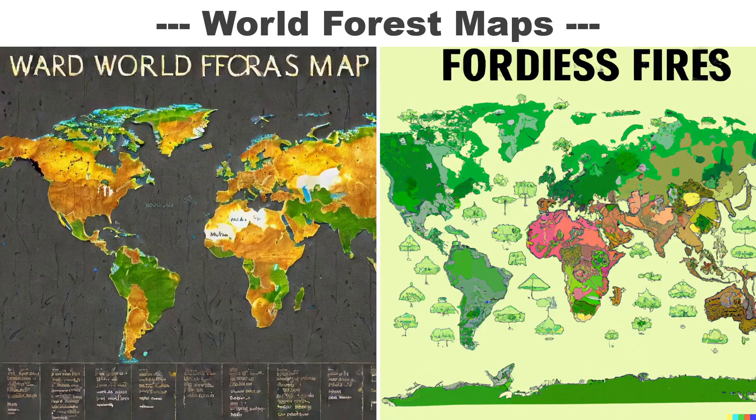AI image generators make weird and interesting maps. These two are meant to show world forest cover, and both have wonderful titles. I love the colors and textural patterns on the left one, and the one on the right has these terrific tree sketches over ocean areas. At first I thought green would represent forest, but some major forest areas are missed and there's a lot of green at very high latitudes, so I'm not sure about that.